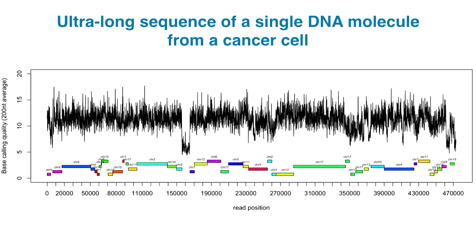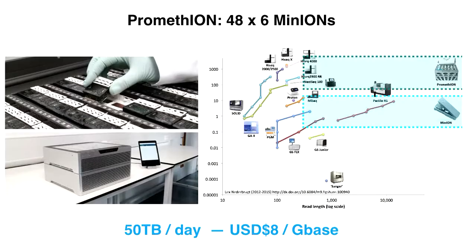We knew that these cells had these recombination events going on, but we didn't know what caused them or what the sequences in between were. With the ultra-long read data, we can go and look at the sequences between those break points — which are all repetitive regions — and learn more about the biology and the etiology of cancer, cancerogenesis.